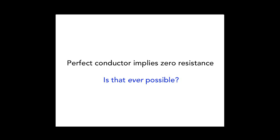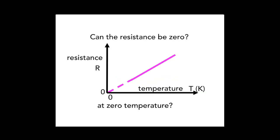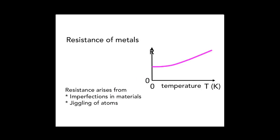Can we have perfect conduction? That would imply zero resistance — a perfect conductor with no resistance at all. There's resistance on the vertical axis and temperature on the horizontal axis. I start out at room temperature with some high resistance; I cool it in liquid nitrogen and the resistance drops. Does it vanish ultimately at zero temperature? In real materials there's always jiggling and imperfections, so even at zero temperature there is some resistance — that's what typically happens.